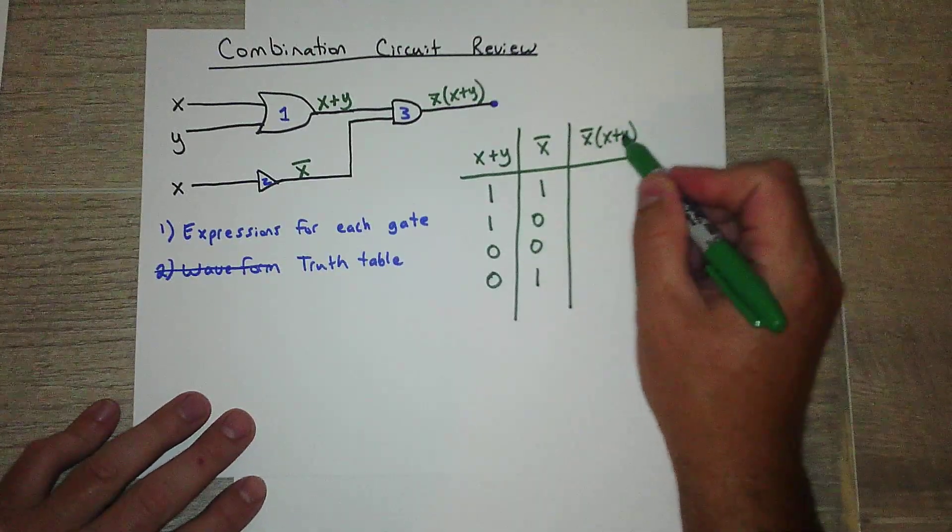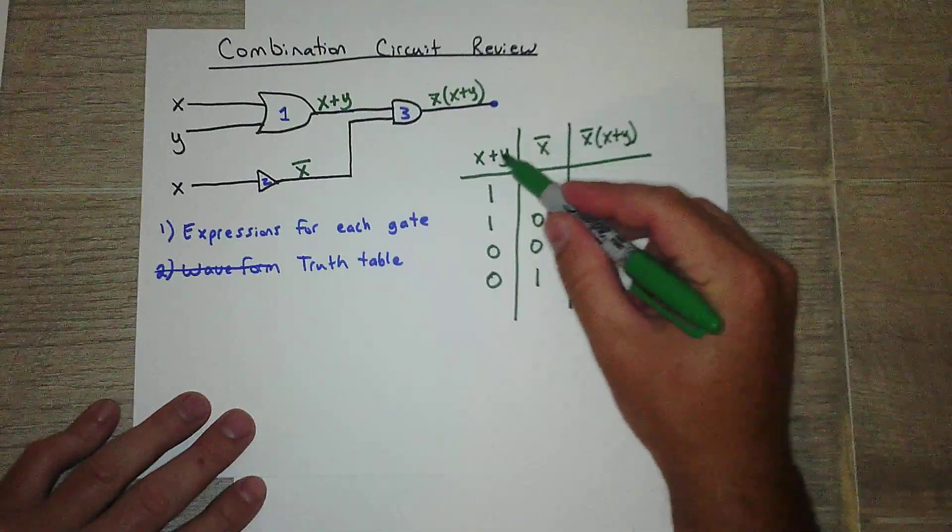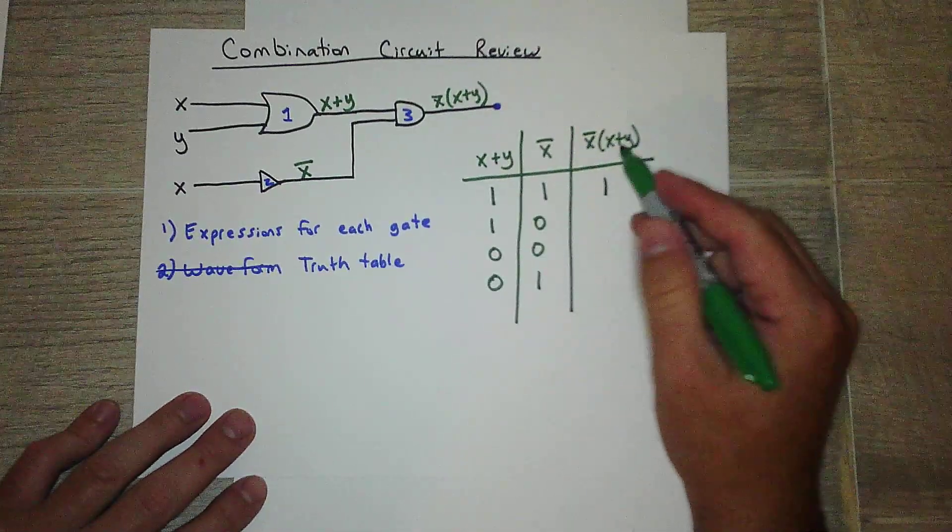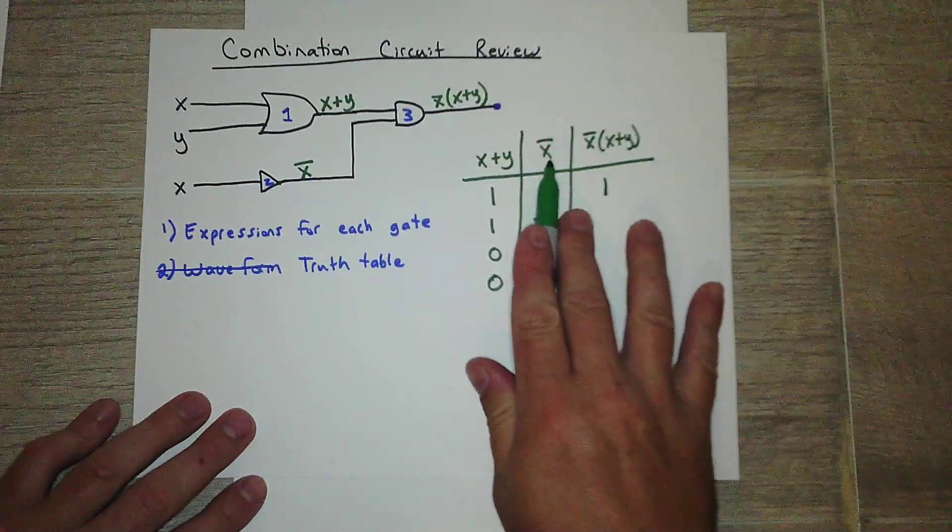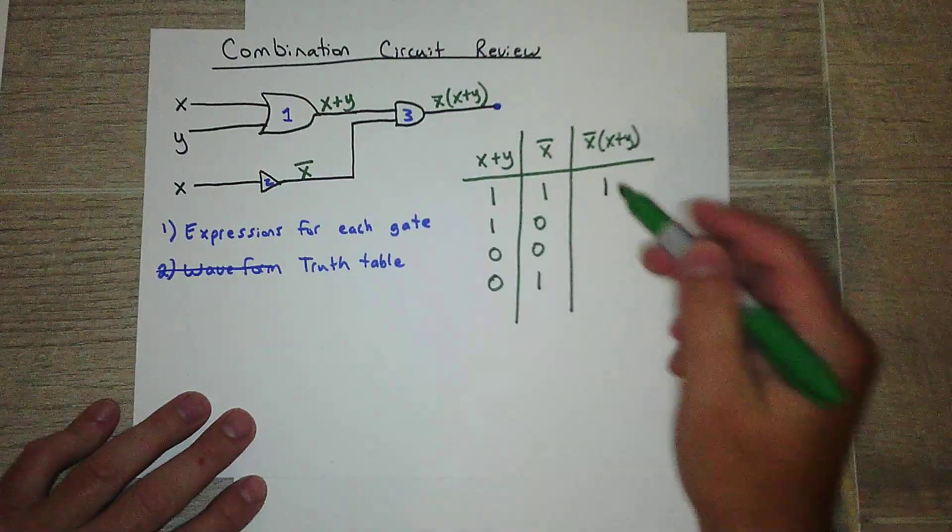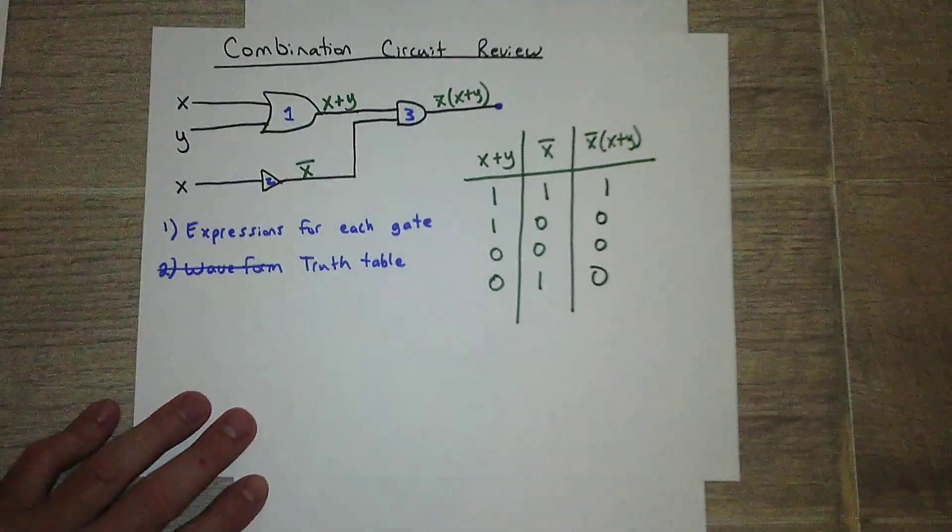So I want it when both of these, this one is on, and this one is on. And that only occurs here. Okay, because it has to be and. So when not x is on, and when x plus y is on.